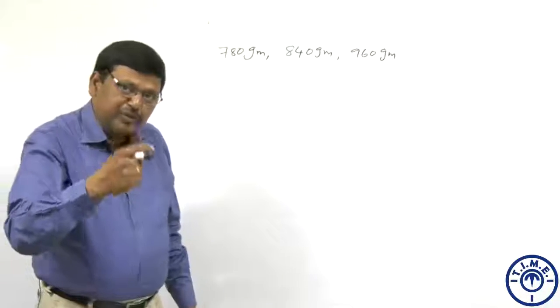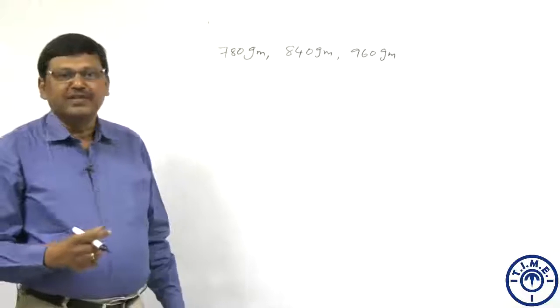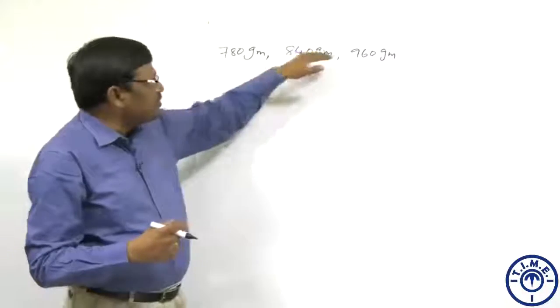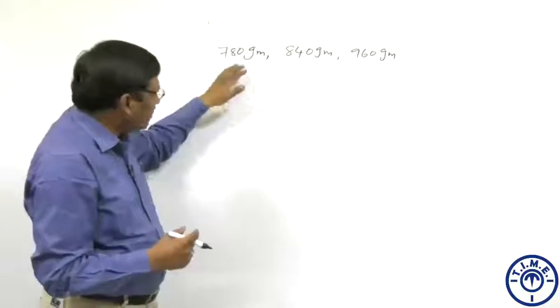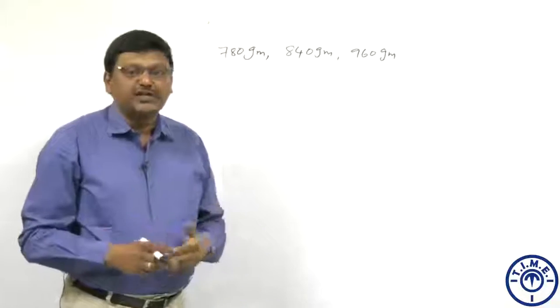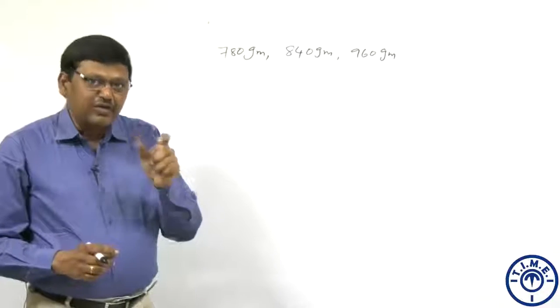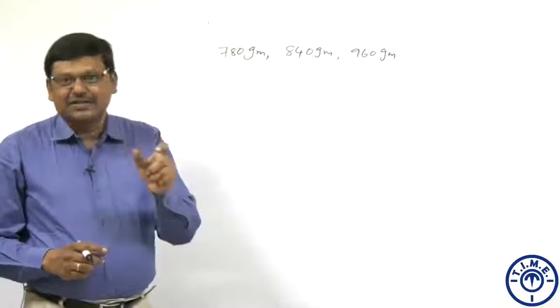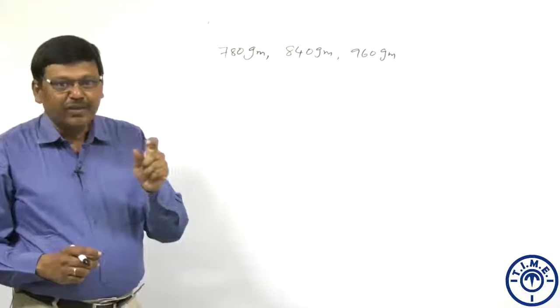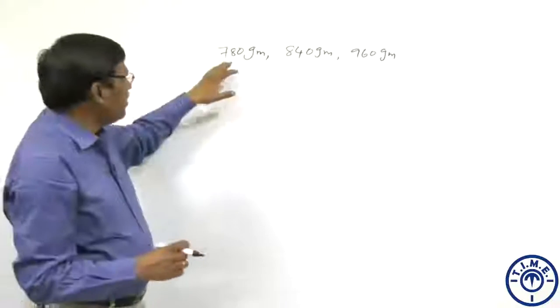But the weight of the piece should be maximum possible, means 10 is not the maximum number possible. Why? 10 is a factor of them, but may not be the highest factor. So in other words, the weight of the piece of the cake should be the highest common factor of the three numbers.